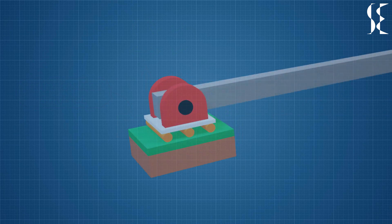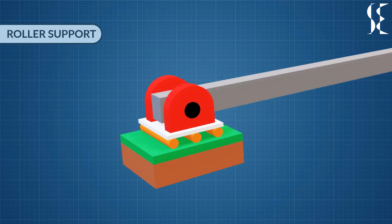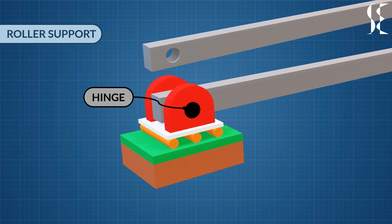Next, we will see roller support. This support has wheels on the bottom and a hinge to attach members in it. The surface can be horizontal, vertical or sloped at any angle.